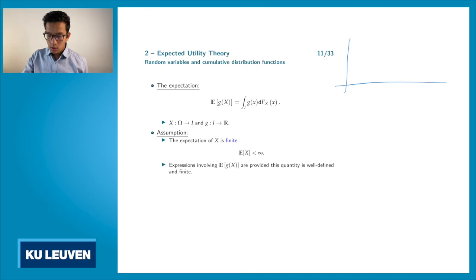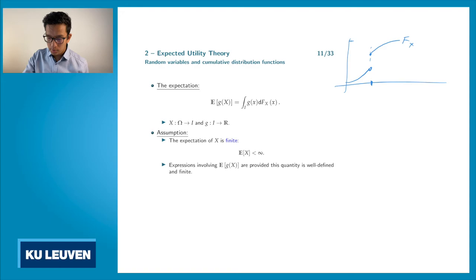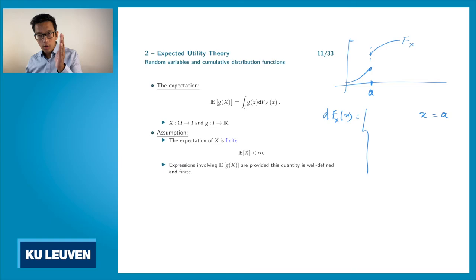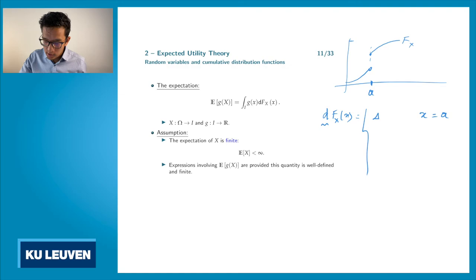Consider the following distribution function — one that has a jump here but is continuous at all other points. This is the function F_X, and assume the jump is at the point a. Then we look at dF_X(x). If x equals a, so we're looking at the jump of the distribution function, we define dF_X as delta_a — the jump size at a.